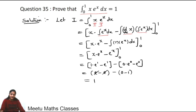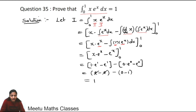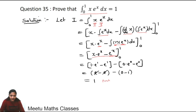The integral of eˣ is eˣ, and the derivative of x is 1. So this becomes [x·eˣ − eˣ] from 0 to 1. Putting x = 1: 1·e − e = 0. Putting x = 0: 0·e⁰ − e⁰ = −1. So the result is 0 − (−1) = 1. Final answer is 1.